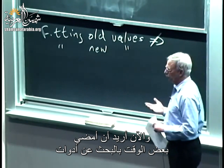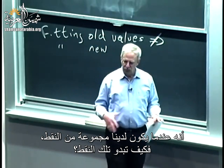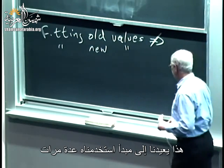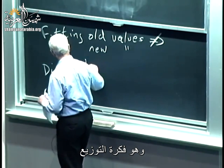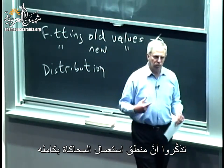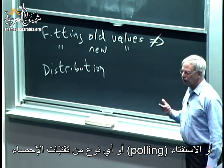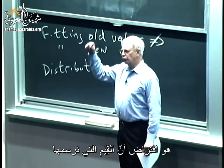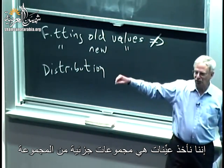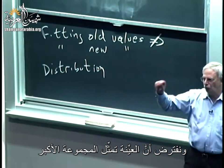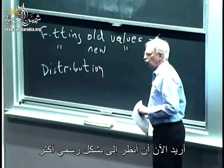I want to spend a little time looking at some tools we can use to better understand the notion of, when we have a bunch of points, what do they look like? How does the variation work? This gets back to the concept of a distribution. The whole logic behind using simulation, polling, or any kind of statistical technique is the assumption that the values we draw are representative of the larger population. We're sampling some subset and assuming that sample is representative of the greater population.